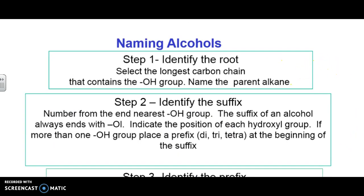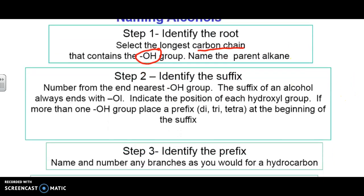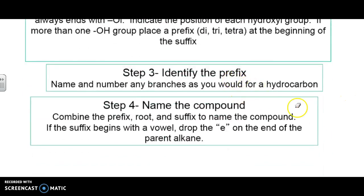Naming priorities haven't changed very much from all the other lessons we've done. We identify the longest carbon chain that's going to contain the OH group. You name the parent alkane or the carbon chain, just like we have in every other example. The suffix, in this case, is going to be alcohol. Now, we identify any prefixes, so pieces that are coming off the chain.